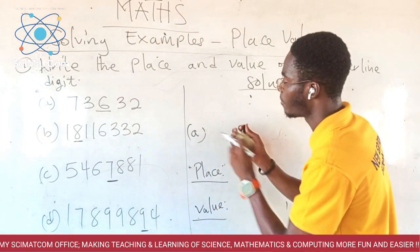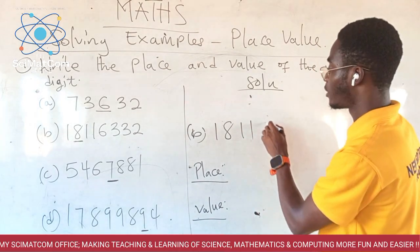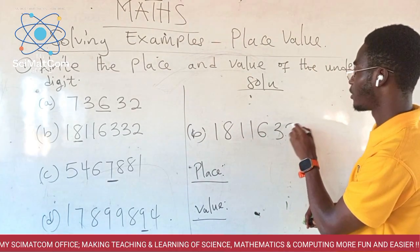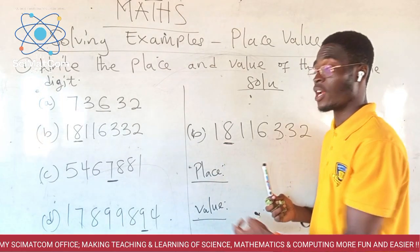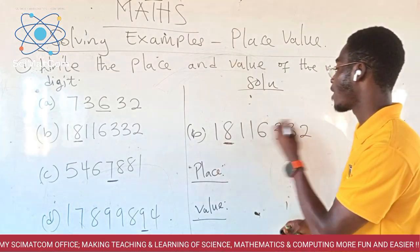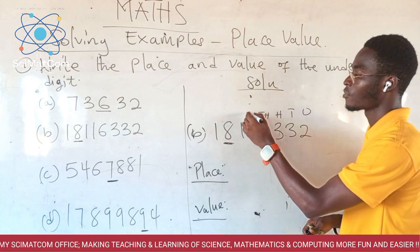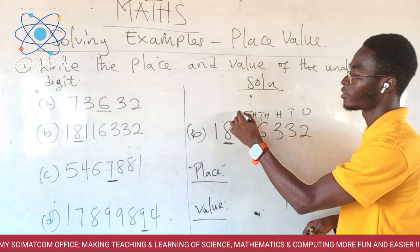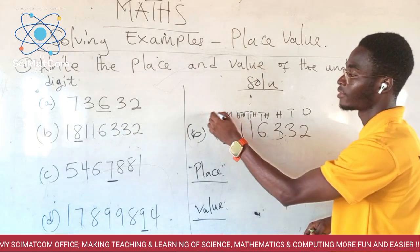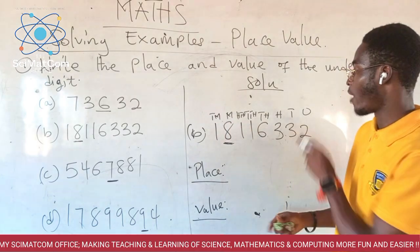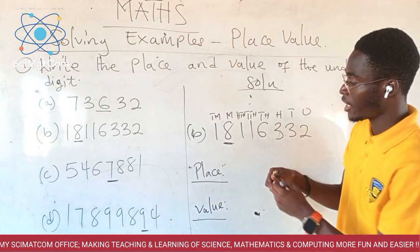Now we are going to look at B. We have 1, 8, 1, 1, 6, 3, 3, 2 and the eight is underlined. We want the place and we want the value of the underlined digit. So let's start from right to left: ones, tens, hundreds, thousands, tens of thousands, hundreds of thousands, million, ten million. So the place of eight is ten million.